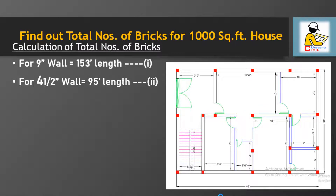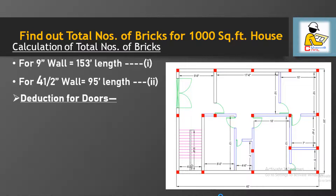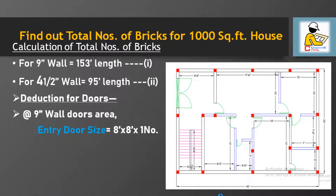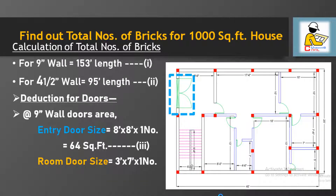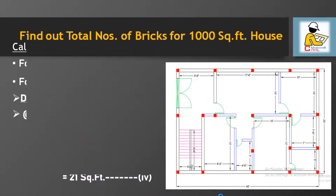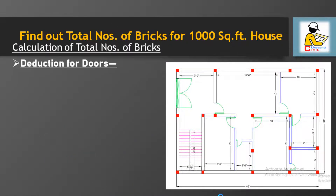So far we have the total length of 153 feet for 9 inch wall and 95 feet for 4.5 inch thick brick wall. Now we need to deduct doors and windows from both wall types. For the 9 inch wall: entry door of size 8 feet by 8 feet — one number, area 64 square feet; and room door of size 3 feet by 7 feet — one number, placed in the 9 inch thick wall.